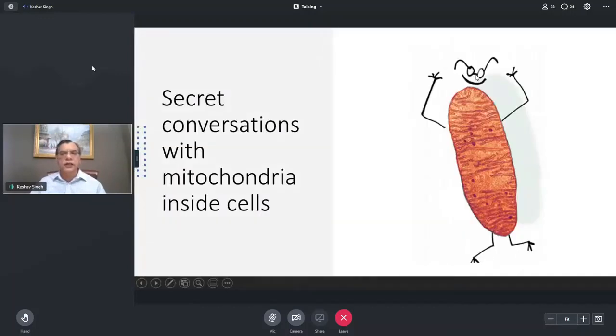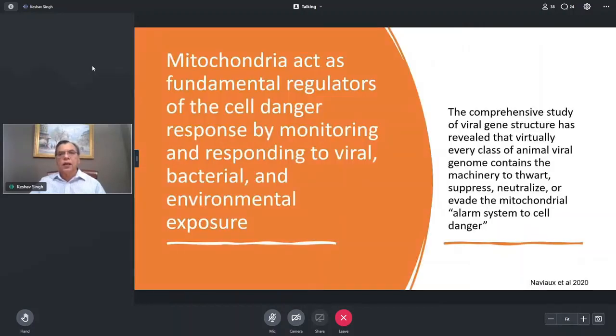So what I'm going to show you is that there appears to be there is secret conversation with mitochondria inside the cells. So the mitochondria talk to each other. Mitochondria talk to other organelles. But on top of that, the microbes, whether viruses or bacteria, also talk to mitochondria. And if you look at the overall picture of that, the mitochondria seem to act as fundamental regulator of cell danger response by monitoring and responding to whether viral, bacterial, or environmental exposure. So this concept actually originated from Bob Naviaux's work in Journal of Mitochondrion. And that seems to hold up very well.